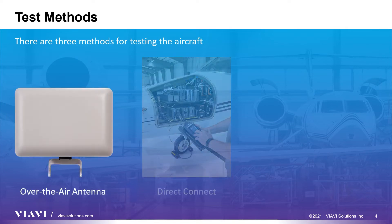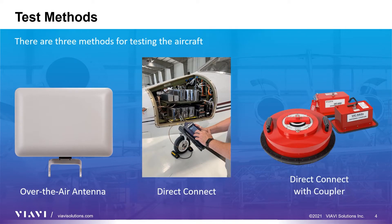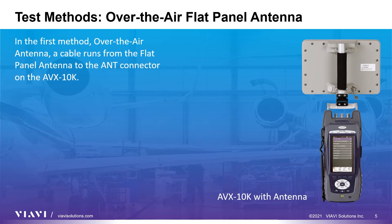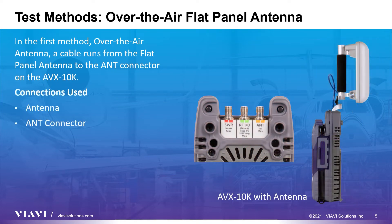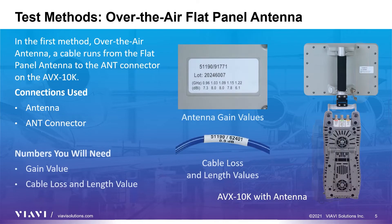There are three connection methods for testing the aircraft: over the air antenna, direct connect, and direct connect with coupler. In the first method, antenna, a cable runs from the flat panel antenna to the ANT connector on the AVX10K. Familiarize yourself with the location of the loss value label on the antenna and connection cable for use later in the setup process.